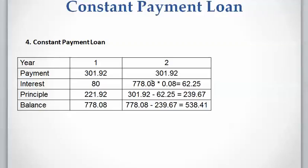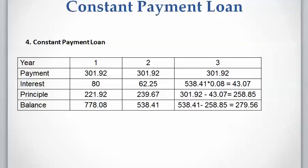For Year 3, the payment is again constant at $302. The interest is the remaining balance of $538.41 multiplied by 8%, which gives $43.07. The principal portion is $302 − $43.07 = $258.93. We deduct this principal from the previous balance to get the remaining balance for Year 3.